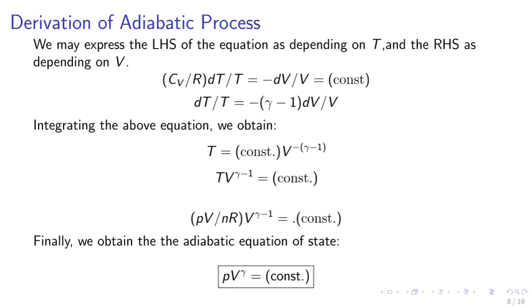We may express the left-hand side of the equation as depending on T and the right-hand side as depending on V. So when we integrate, we get T times V to the gamma minus 1 equals constant. Using the ideal gas law, we may obtain the adiabatic equation of state: PV gamma equals constant.